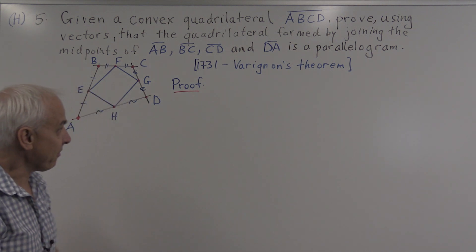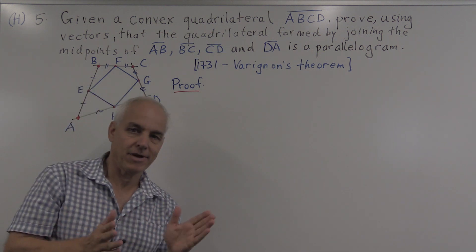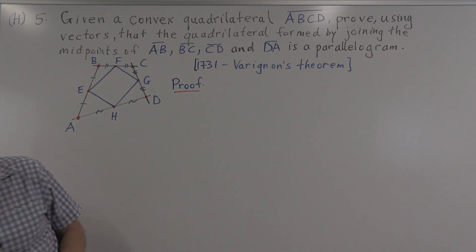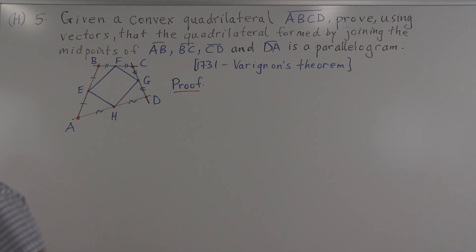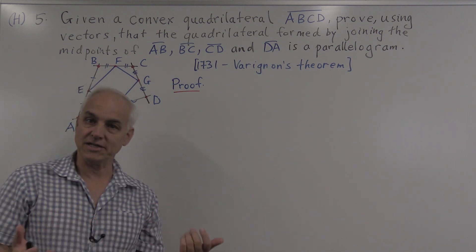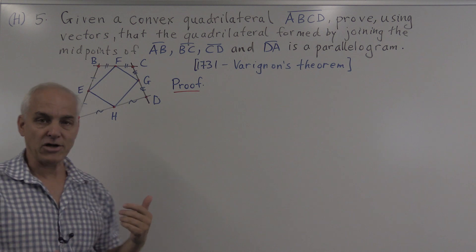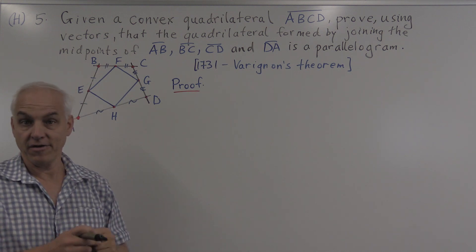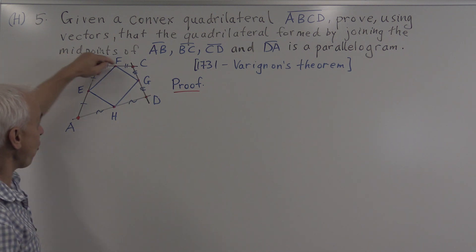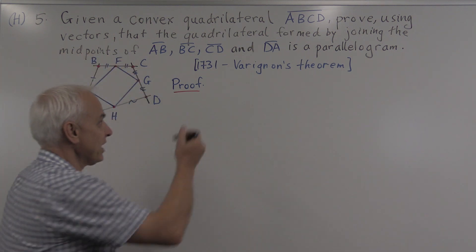We want to give a proof using just basic arithmetic with vectors. So how do we do it? Let's start by introducing some vectors. Since we have a quadrilateral, there are naturally four vectors we can rely on — the vectors formed from the four sides of this quadrilateral.